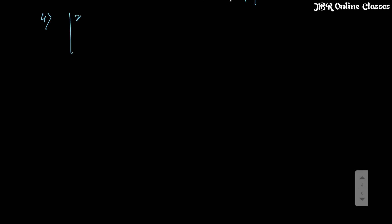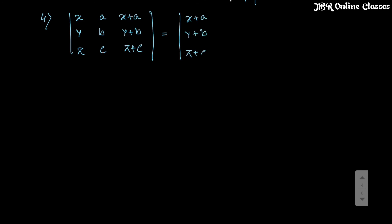Problem 4: without expanding, find the value of the determinant with entries x, a, (x+a) / y, b, (y+b) / z, c, (z+c). Notice that C1 + C2 exactly equals C3, so the operation C1 + C2 shows C1 and C3 are identically the same. Therefore the answer is 0.